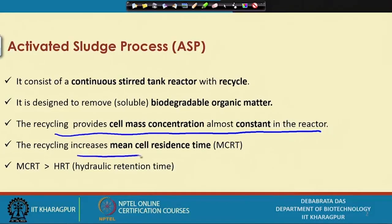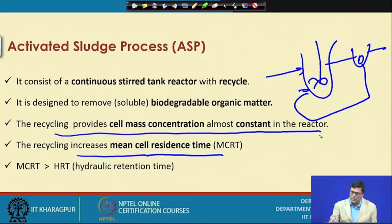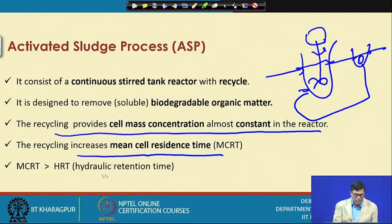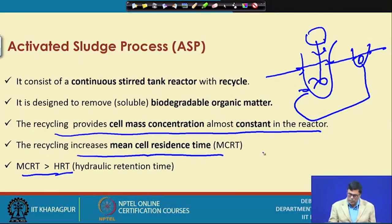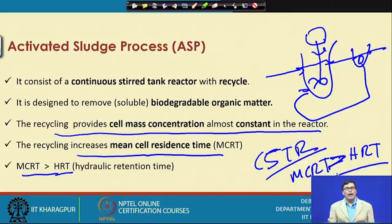Recycling is necessary and it increases the mean cell residence time. Since we are recycling cells back, the cell retention time in the reactor will increase. In that case, the mean cell residence time should be higher than the hydraulic retention time. In case of CSTR or chemostat, the mean cell residence time is equal to the hydraulic retention time. But as soon as you do the recycling, the mean cell residence time is higher than the hydraulic retention time — this is the main purpose of recycling.